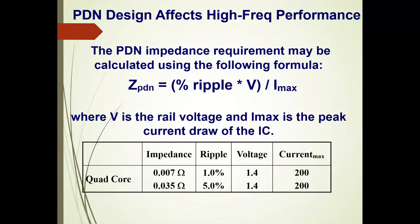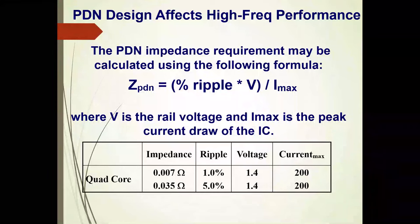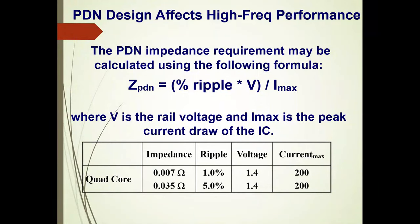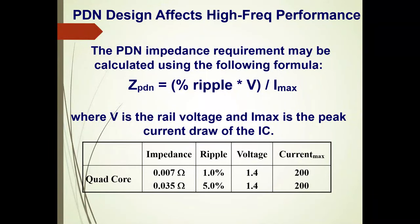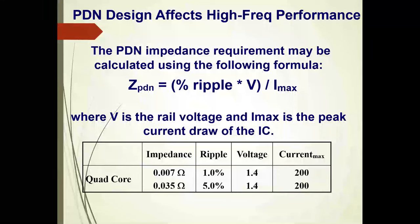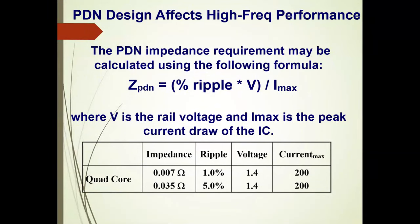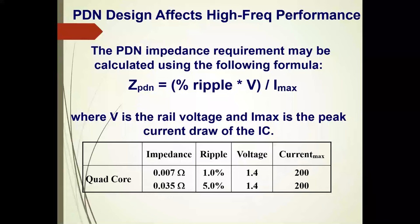The impedance requirements may be calculated as: Z(power) = (percent ripple × voltage) / maximum current. For this quad-core processor, if you need only 1% ripple on the 1.4V rail at a maximum of 200 amps, you would need a power distribution network impedance of 0.007 ohms. If you could accept 5% ripple, it would be 0.035 ohms.